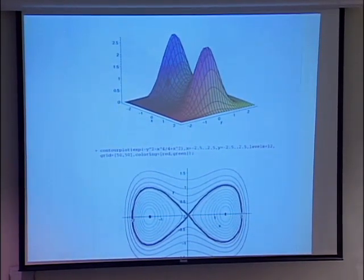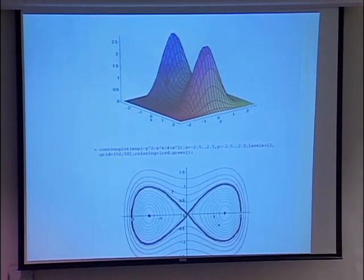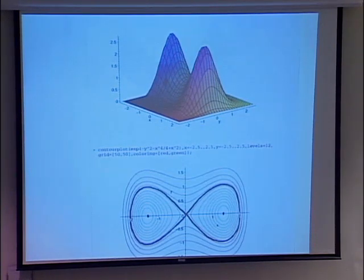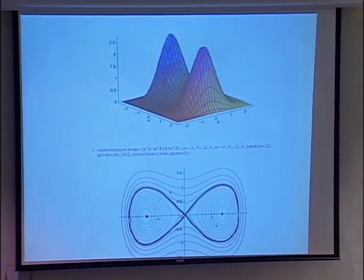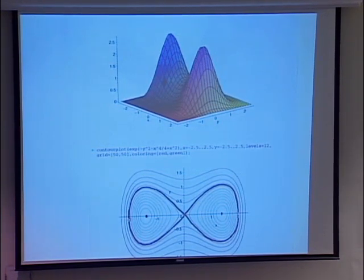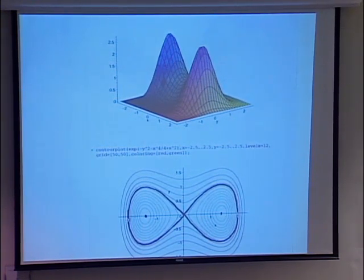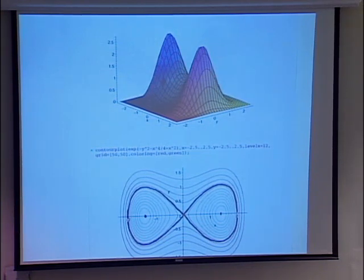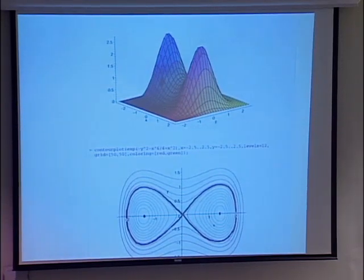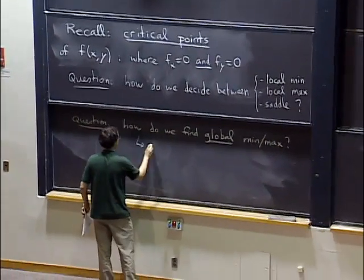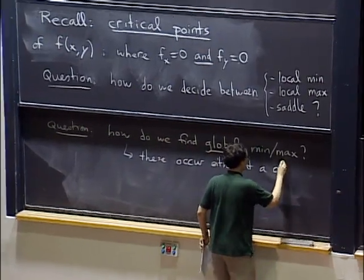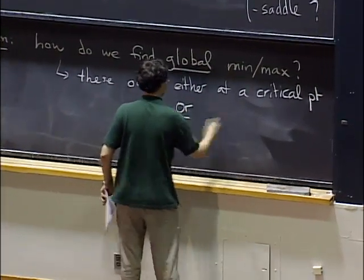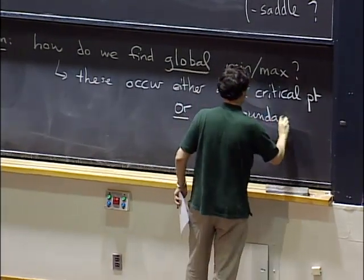If you are looking for the minimum of this function, the minimum is not going to be at any of the critical points. It looks like the minimum is actually out there on the boundary or at infinity. The global minimum or maximum could occur either at a critical point, on the boundary of the domain, or at infinity.